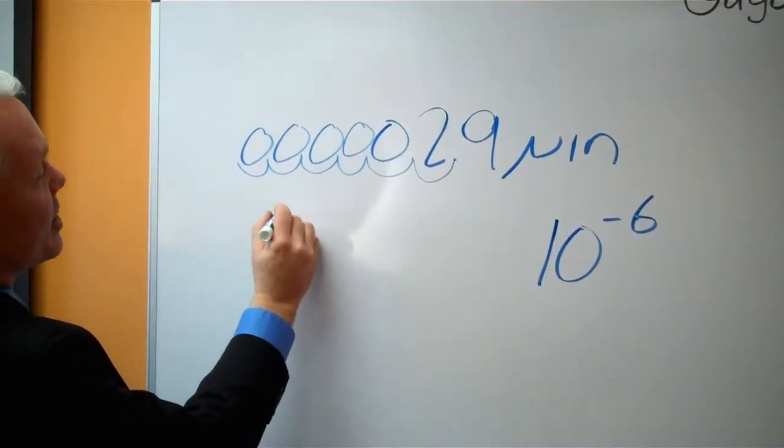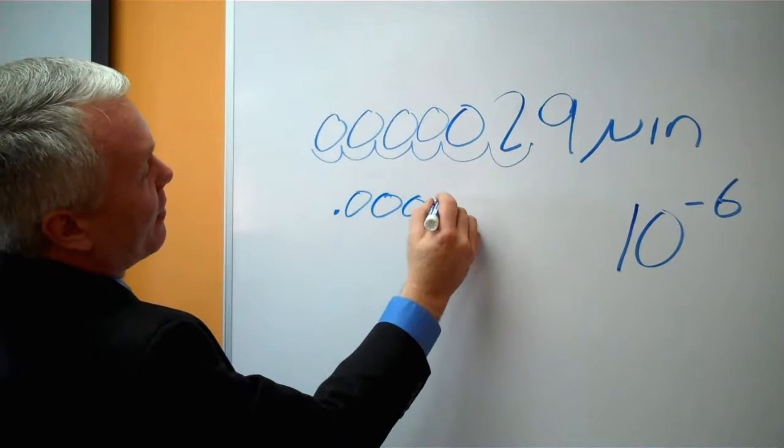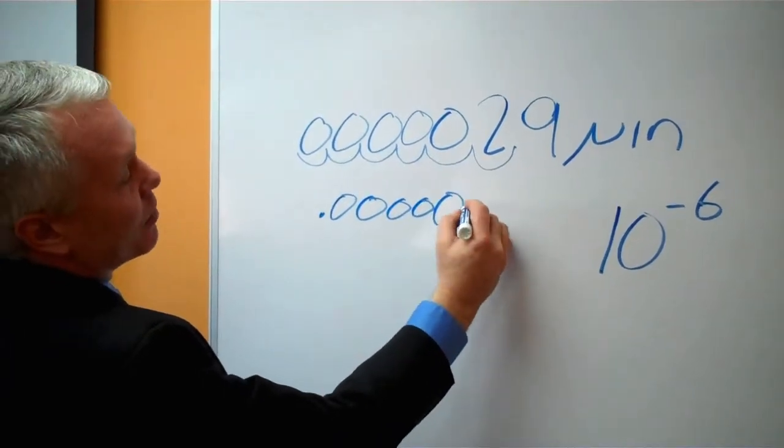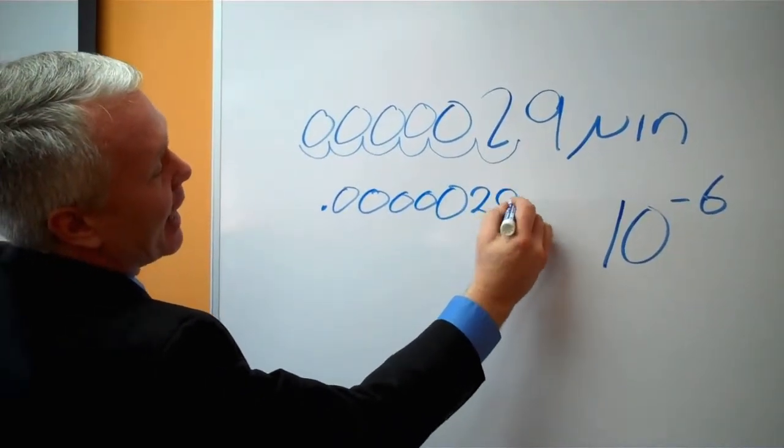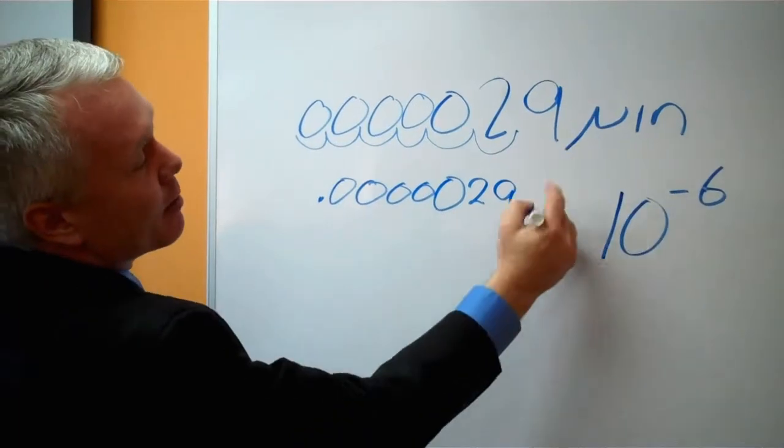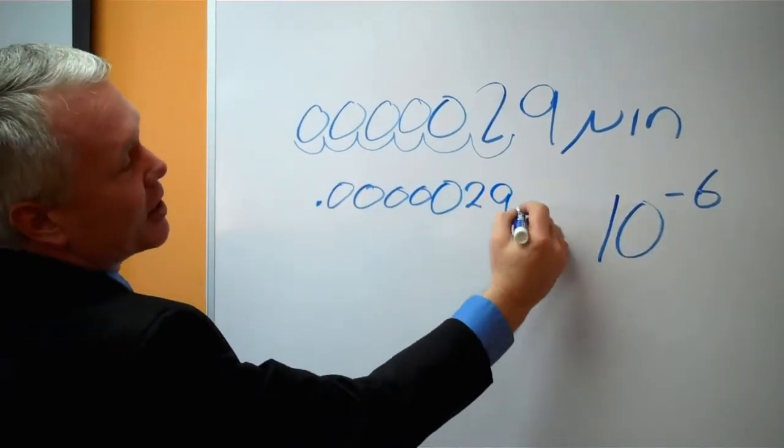which means that would be 5 zeros, a 2, and a 9. And you can thus remove the micro inch symbol because you've adjusted it back to inches.